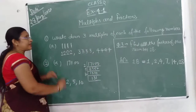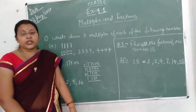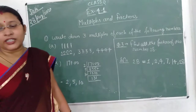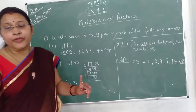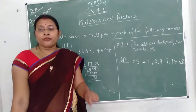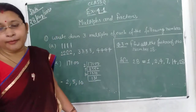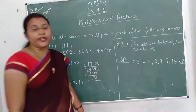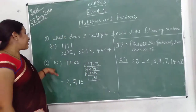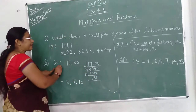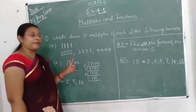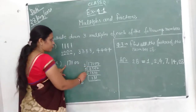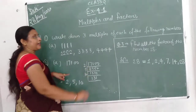Question number two: write down three factors, other than one and the number itself, for each of the following numbers.